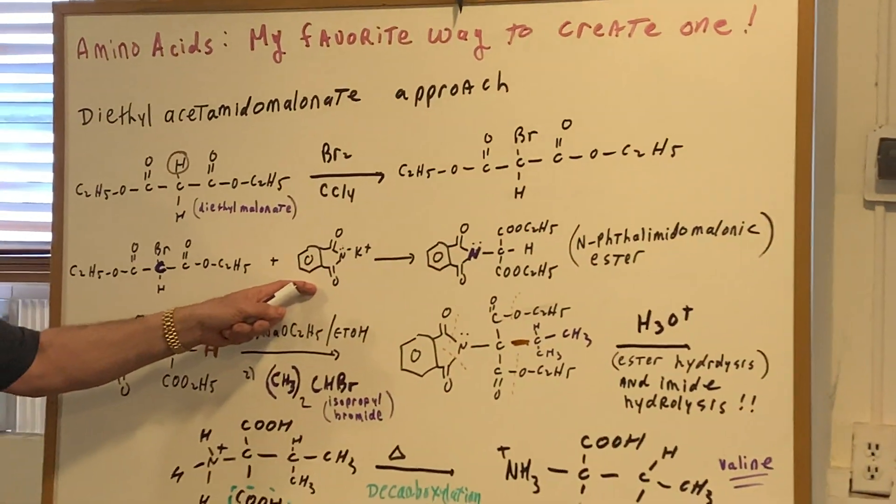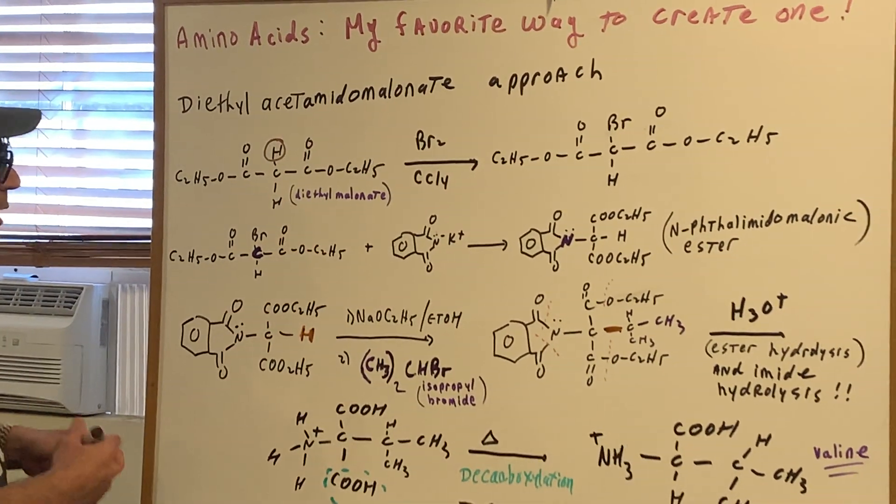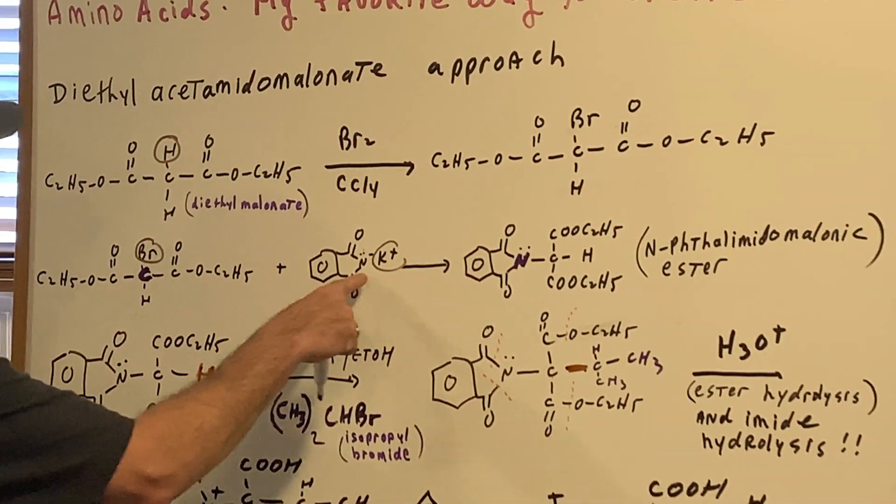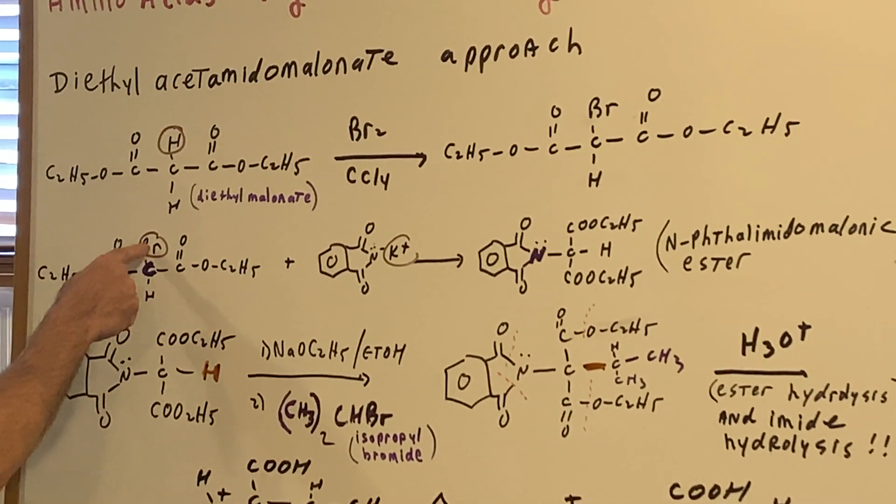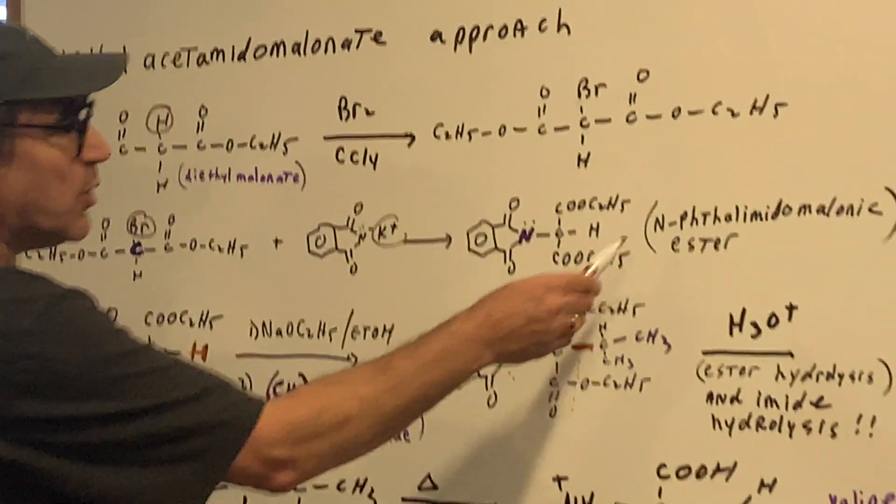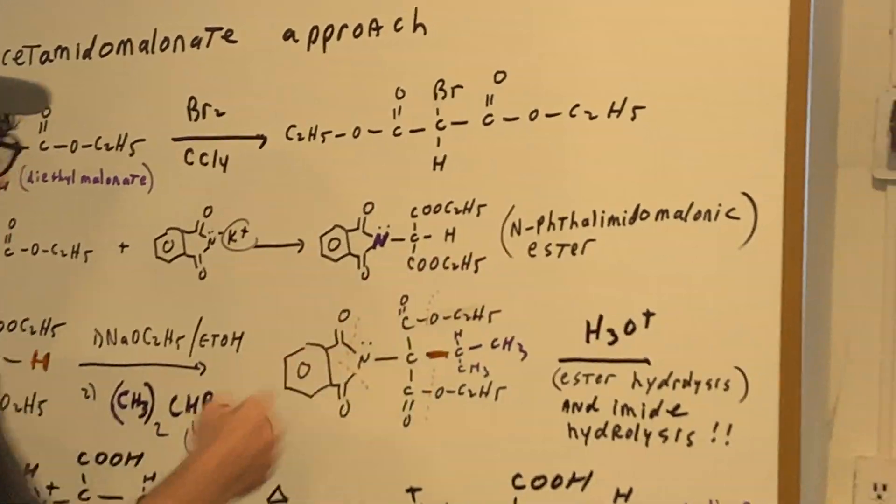So we're going to take potassium phthalimide. We've done this, and we're going to react this. And all we're going to do is we're going to simply split off the K and the Br. And notice I put it in color where you can see where I hooked it up. So when you take off the Br and the K, we join them together to make what's called an N-phthalaminomalonic ester.